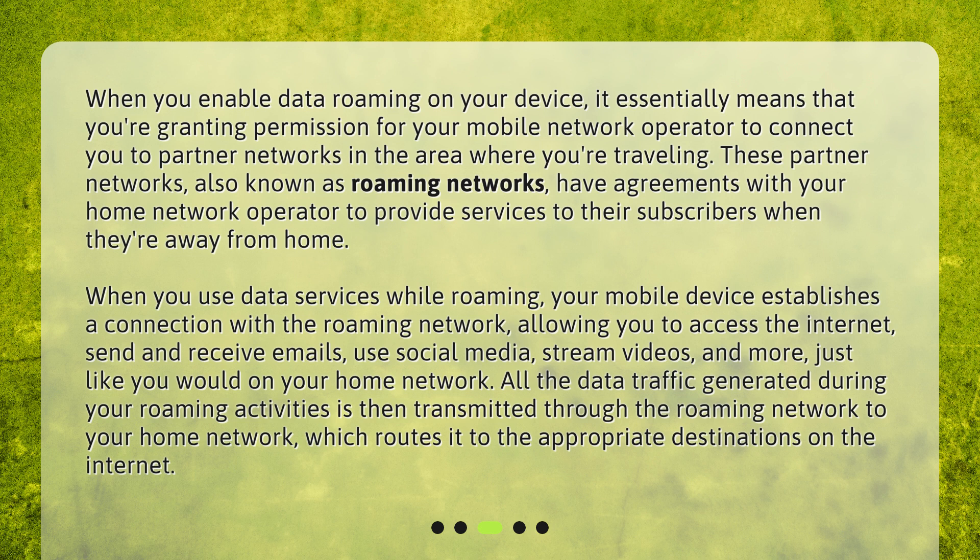When you use data services while roaming, your mobile device establishes a connection with the roaming network, allowing you to access the internet, send and receive emails, use social media, stream videos, and more, just like you would on your home network. All the data traffic generated during your roaming activities is then transmitted through the roaming network to your home network, which routes it to the appropriate destinations on the internet.